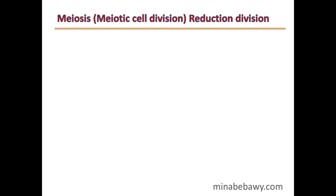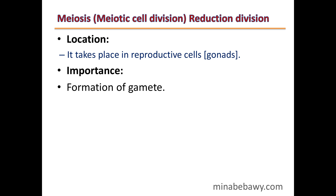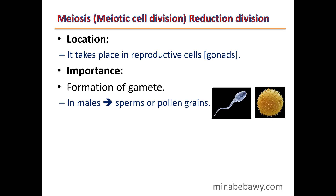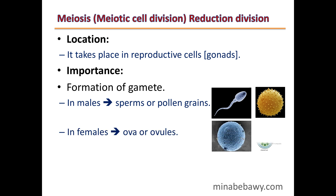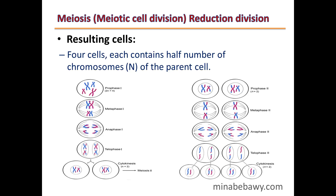The second type of cell division is meiosis, or meiotic cell division, also called reduction division. It takes place in reproductive cells or gonads. The importance of meiosis is in the formation of gametes: in males, sperms in animals and humans, and pollen grains in flowering plants; in females, ova in animals and humans, and ovules in flowering plants. Four cells are produced from meiosis, each containing only half the number of chromosomes — haploid N — of the parent cell.